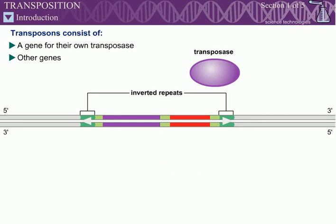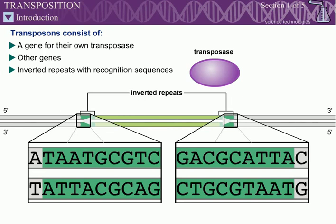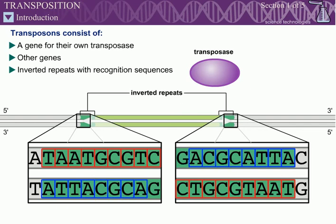The very ends of a transposon's DNA are arranged as inverted repeats. These inverted repeats range from about 25 to a few hundred base pairs and carry the recognition sequences for transposase binding.